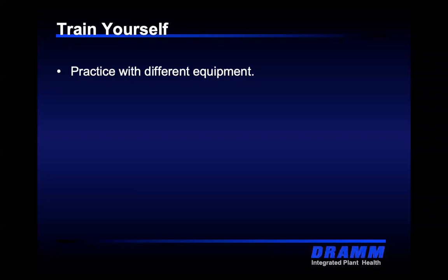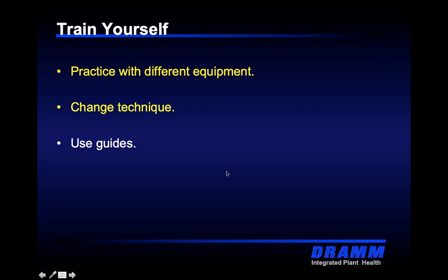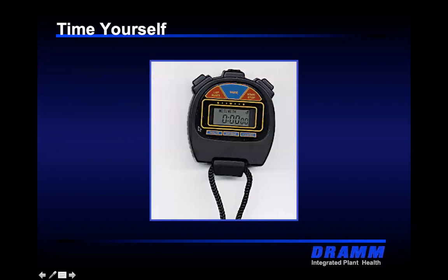Practice with different types of equipment. If you've been doing it the same way and every year you're fighting whitefly, aphid, or mealybug, it might be a simple change in technique that makes the difference. And most importantly, use the label guidelines — if it says a certain amount per thousand square feet or per acre, use that guideline when making those applications.